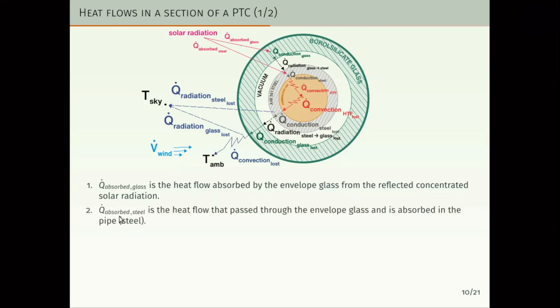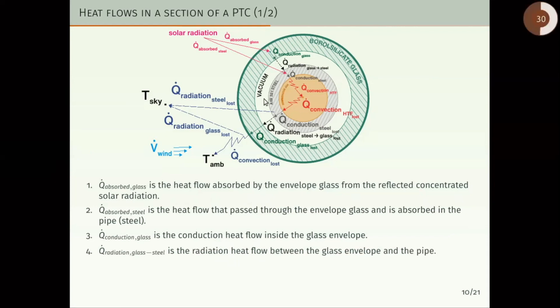The next is the Q dot absorbed steel, the heat flow that passed through the envelope glass and is absorbed by the pipe steel. Q dot conduction glass is the conduction heat flow inside the glass envelope. Q dot radiation glass steel is the radiation heat flow between the glass and the steel. Q dot conduction steel is the conduction heat flow inside the pipe.